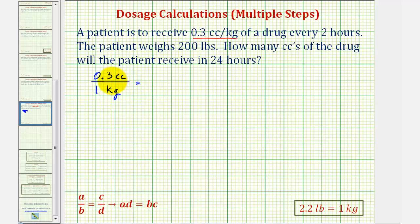The second ratio will have an unknown value. We first want to determine how many cc's a 200 pound patient needs. So we'll have an unknown, or x cc's, to 200 pounds. Once we solve this proportion for x, we can then determine how many cc's over the 24 hour period.